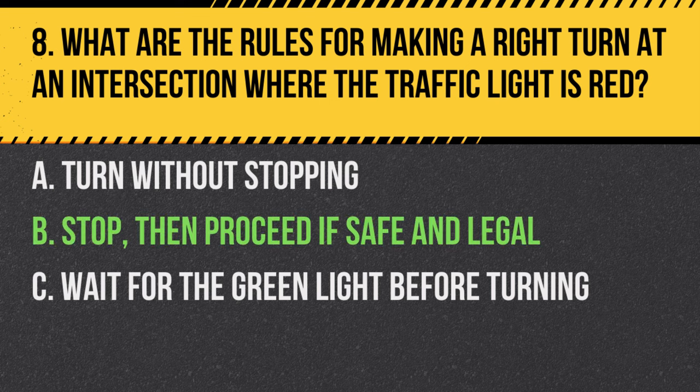Question 8. What is the correct action when making a right turn at a red light? Answer: C. Stop then proceed if safe and legal. Drivers must come to a complete stop at a red light before making a right turn, if allowed.